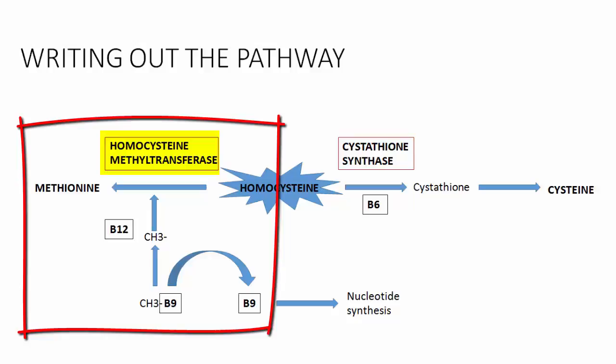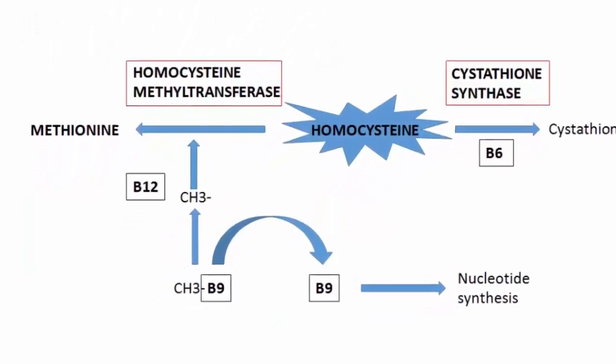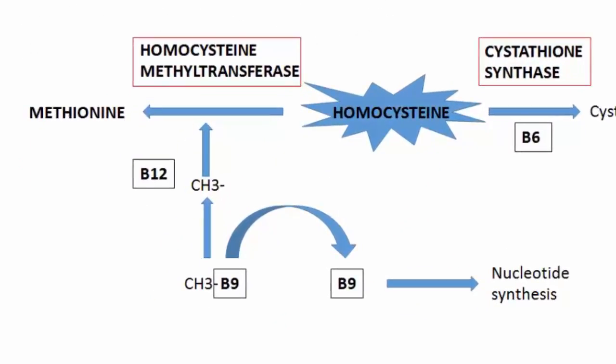The pathway to the left is dictated by homocysteine methyltransferase. As the name implies, this pathway essentially involves tacking on a methyl group to homocysteine to form methionine. This pathway actually requires two separate vitamins. The right pathway only requires B6, but the pathway on the left is going to require both B9 (folate) and B12.